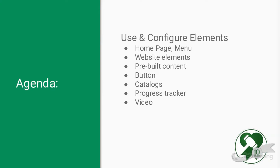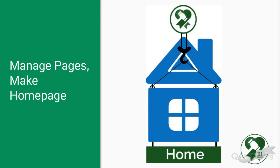We're going to talk about the use and configuration of all the fun elements within the Octre website editor. We're going to start with the home page and the menu, chat about system and custom pages, talk about the website elements and pre-built content. No auction website is complete without buttons, a catalog, a progress tracker, and a video.